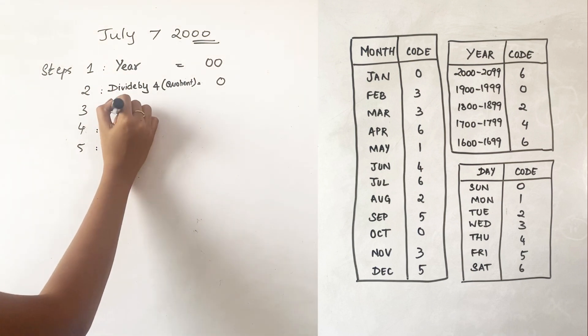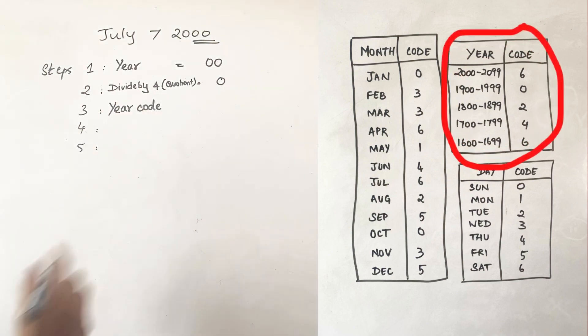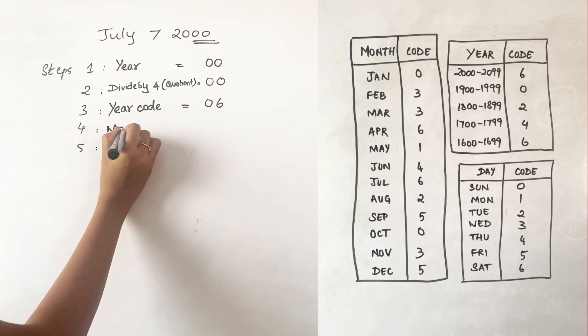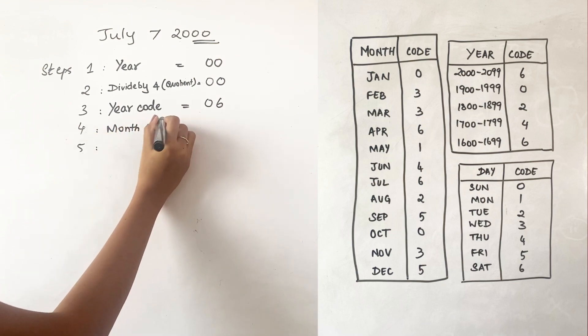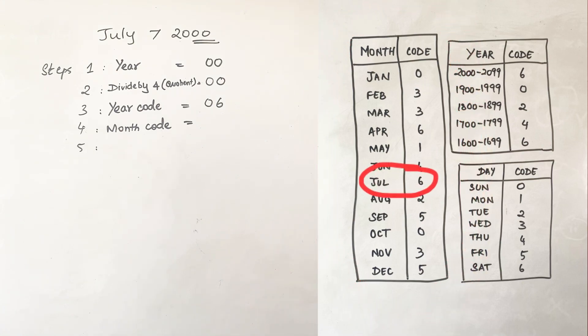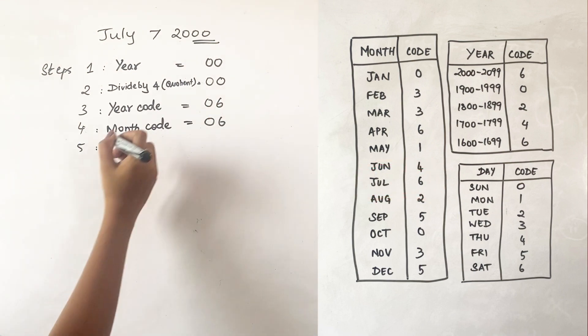The third step is to write the year code. Check the box here, it's 2000, so what is the code? It's six, right? So you put six here. Moving on to the next step, you have to write the month code. Check this box right here. The month is July, so what is the code? It's six, right? So we write six here again.